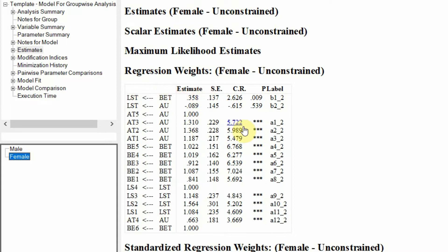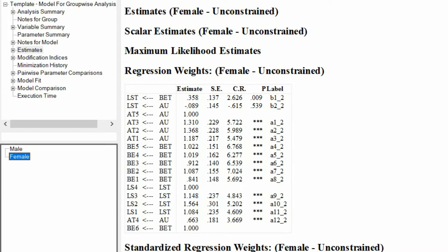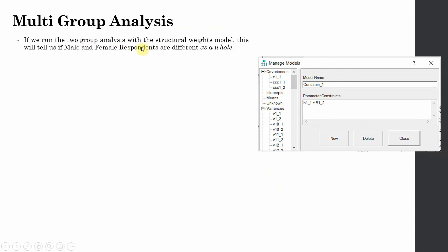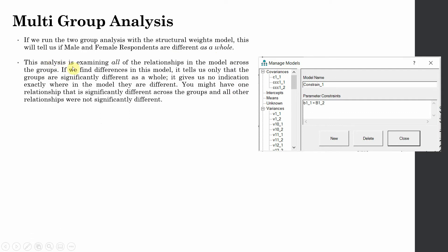In order to do this, I need to create constraints. You need to create a new constraint whereby you constrain the two relationships. Running the two-group analysis as we did will tell us if male and female respondents are different as a whole, examining all relationships across the groups. If we find differences, it tells us only that the groups are significantly different as a whole.